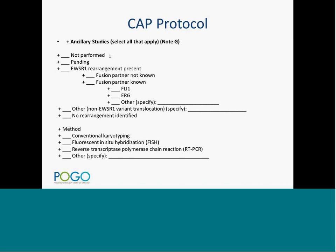The 2016 protocol is more detailed than 2012 regarding molecular testing. It asks whether the EWSR1 rearrangement was identified, whether the fusion partner is known and which one, and what method was used — karyotyping, FISH, or RT-PCR. The 2012 protocol simply asked whether conventional karyotyping was performed or not. Additional information such as whether fresh or paraffin-embedded tissue was used can be added in comments.